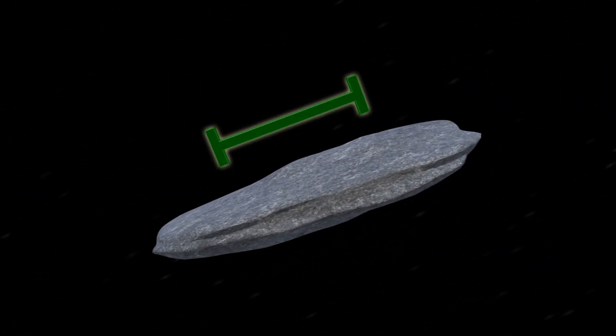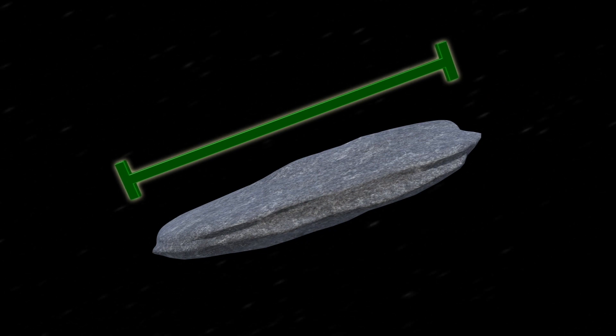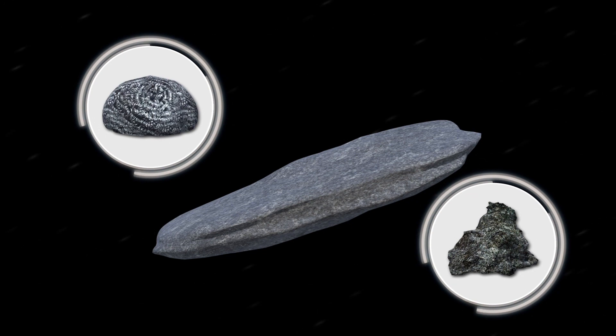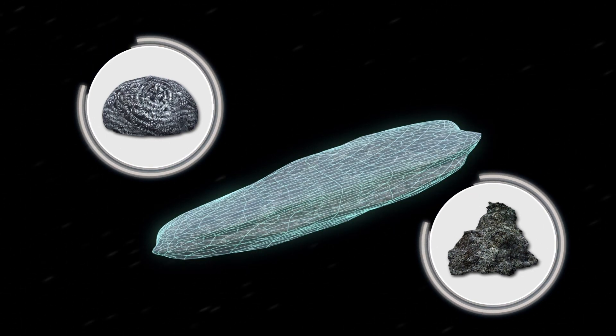According to Astronomy.com, Oumuamua is 800 meters in length and 80 meters in width. A lot about it is unknown, but scientists speculated last year that it may consist of materials like metals or rocks.